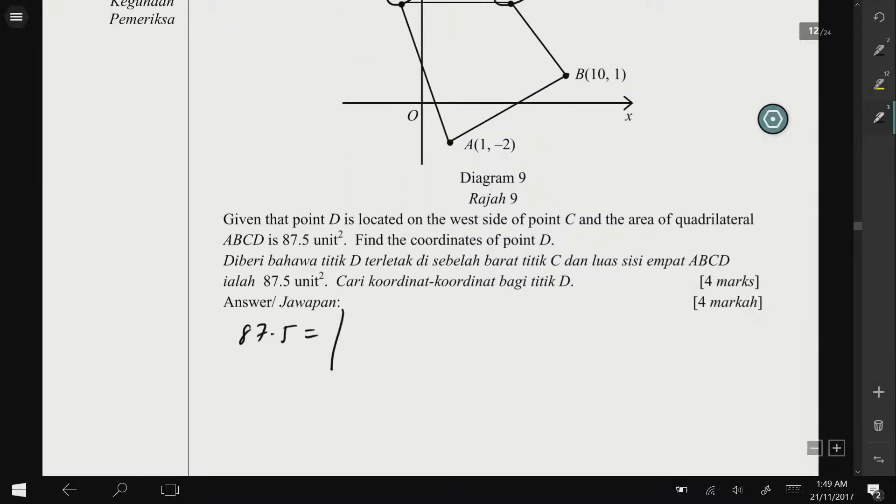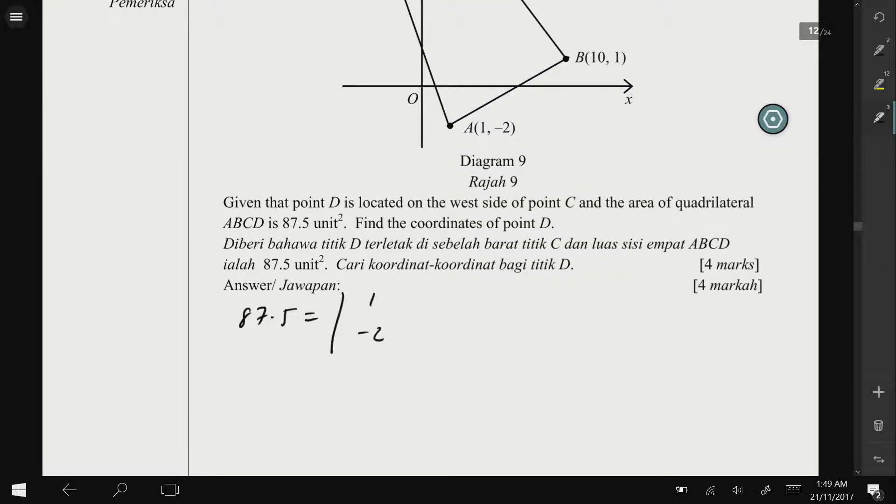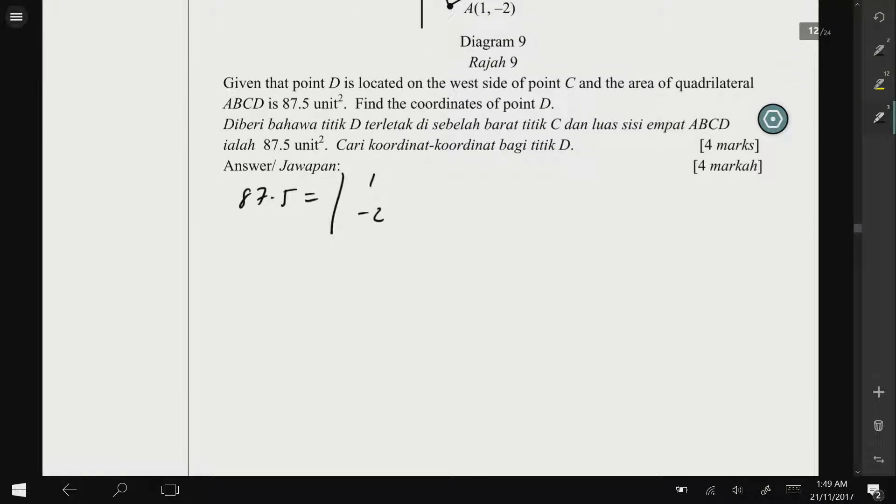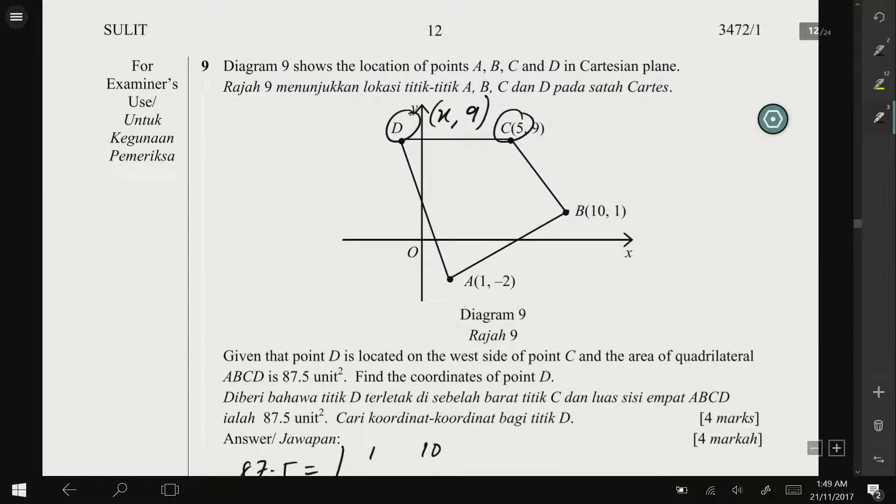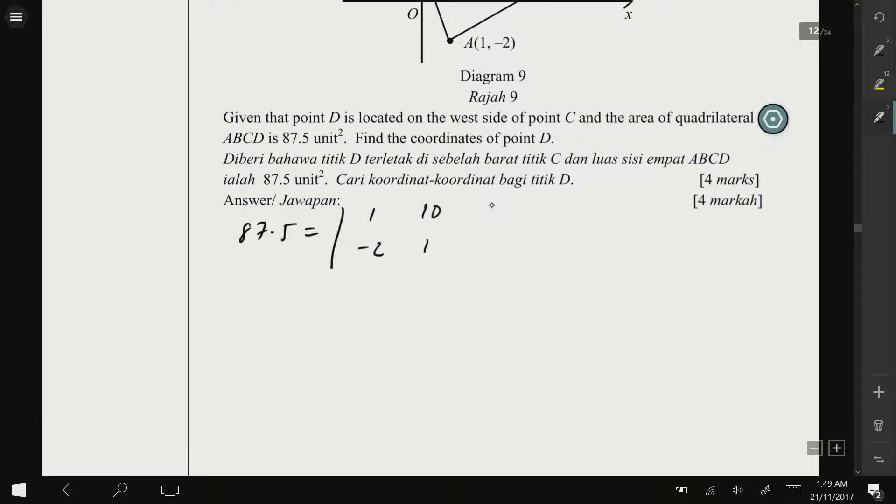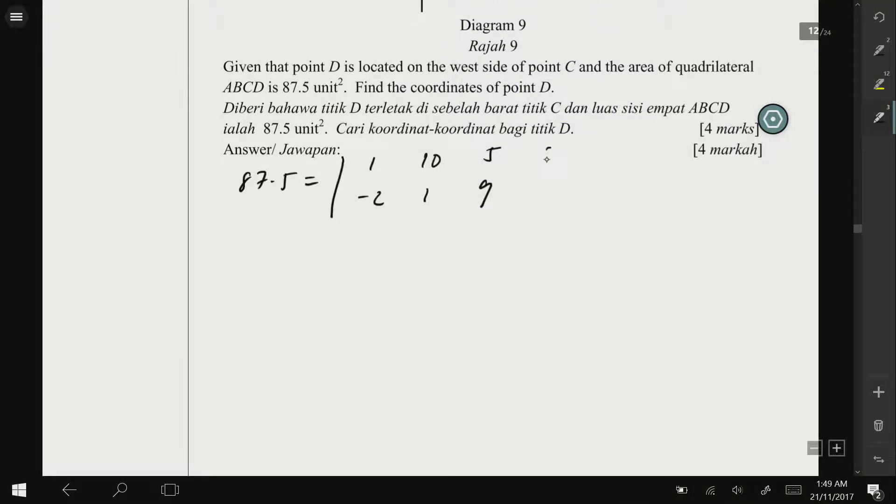We can start from point A which is (1, -2), and then point B here is (10, 1), and then point C is (5, 9), point D is (x, 9), and then we return to the first point which is (1, -2).